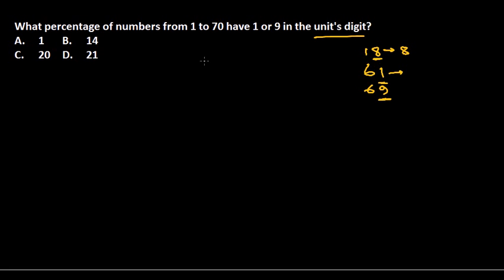It's a pretty easy problem. One question people always stumble about is whether you count 1 or 9 themselves. Of course you need to count 1 and 9 because these are also in the unit's position. Simply, 1 has 1 in the unit's position and 9 has 9 in the unit's position, so you need to count them.